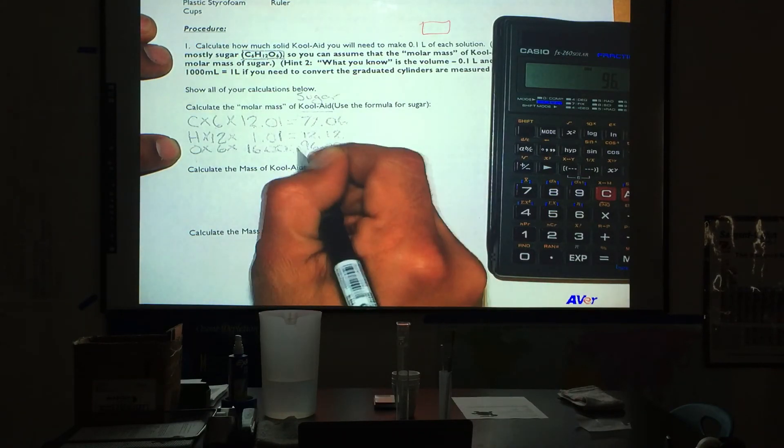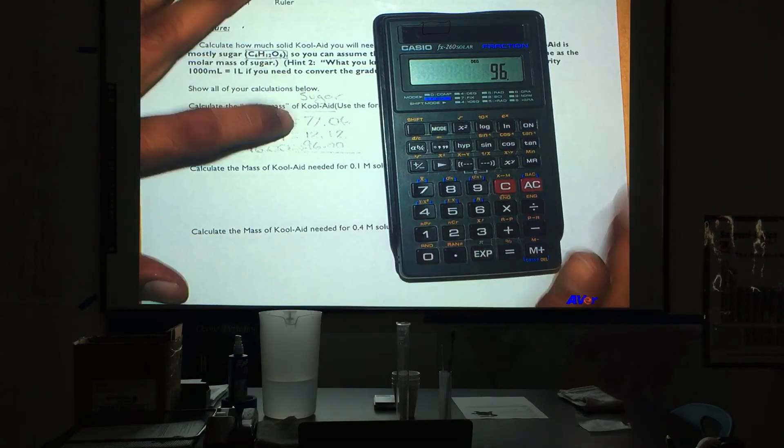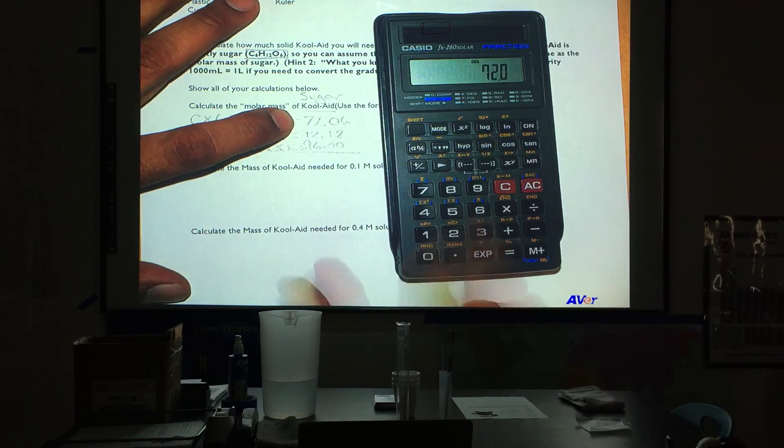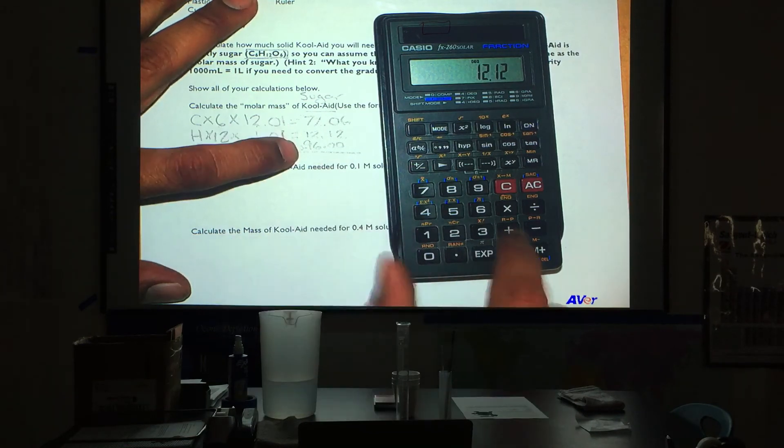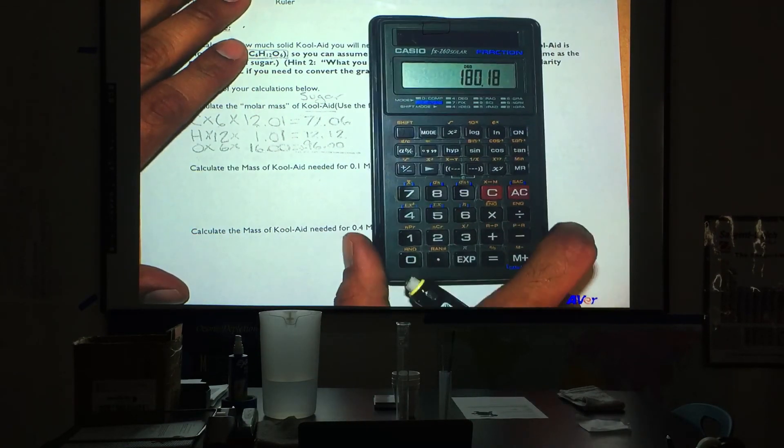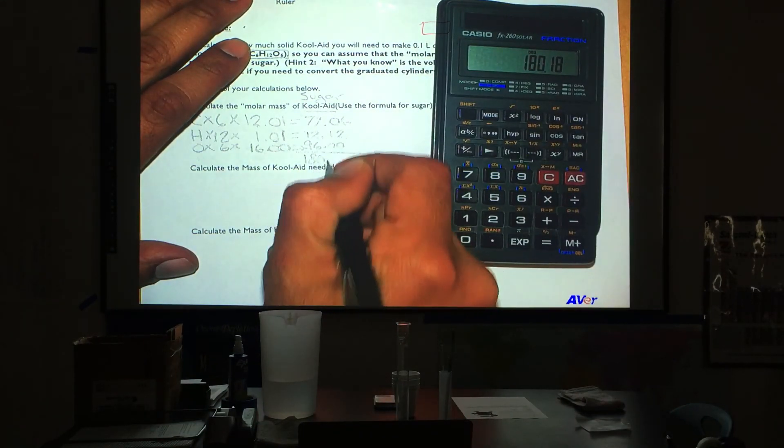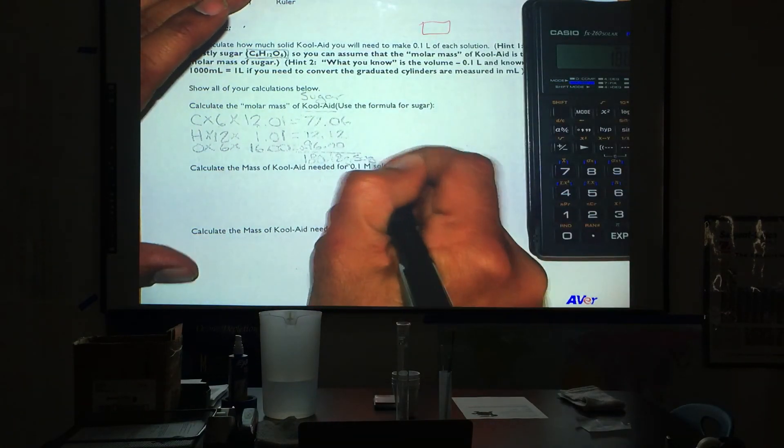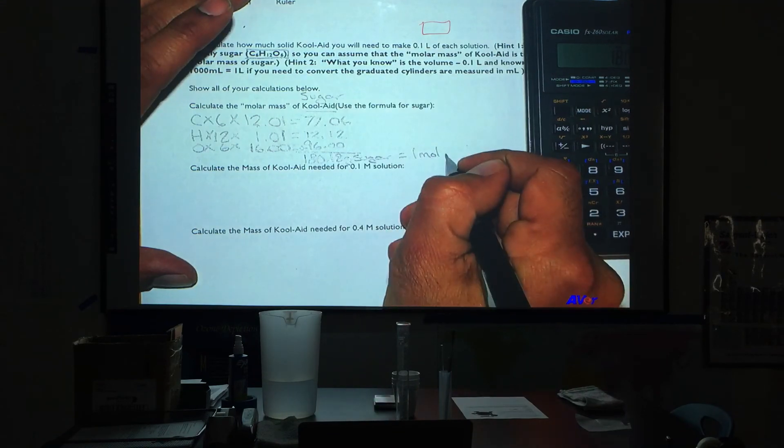We will add these together to tell us how much one mole of sugar weighs. 72.06 plus 12.12 plus 96 equals 180.18 grams of sugar, which equals 1 mole of sugar.